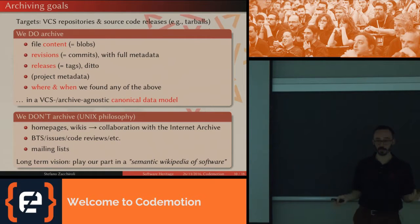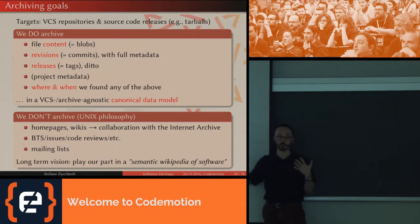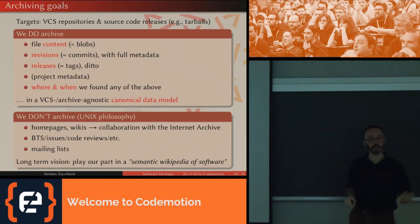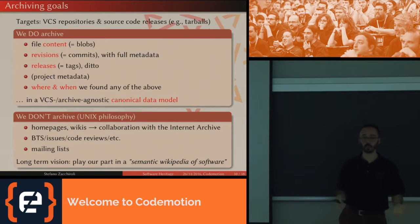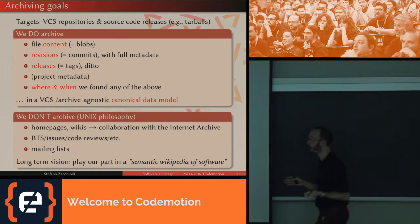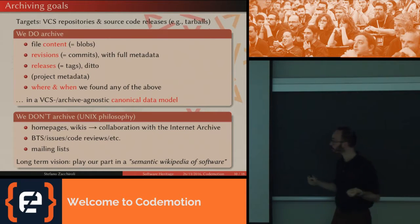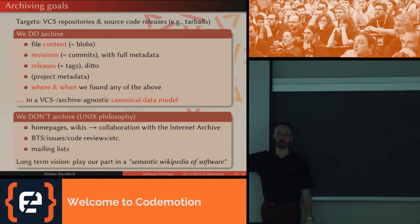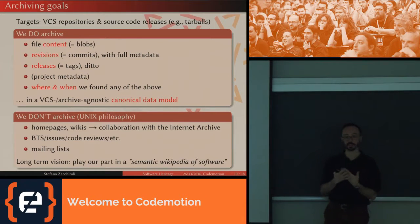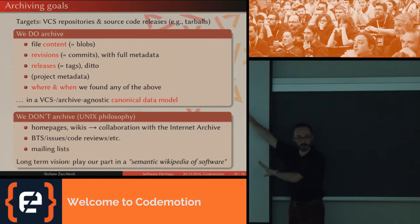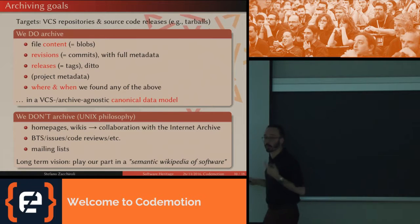We save releases — usually specific commits tagged as important, like version 1.0 — with all their metadata. We save project metadata such as the homepage. We timestamp everything: this is called provenance by preservation scientists, and every time we retrieve something and add it to the archive, we annotate the URL where we found it and the timestamp. We also massage everything into a canonical data model that can represent changes across all VCS types — so even if you stored something in Subversion, you'd be able to download it as Git.